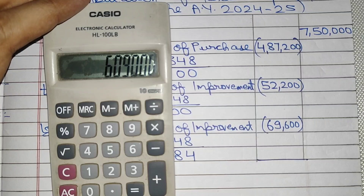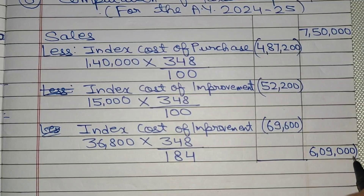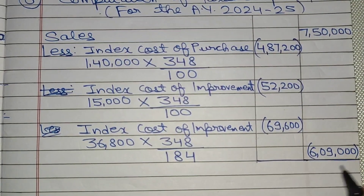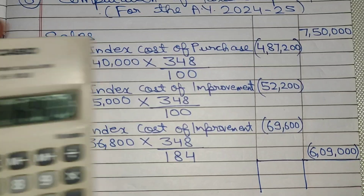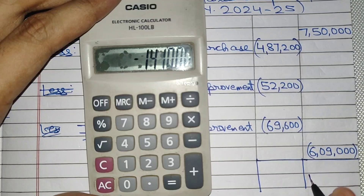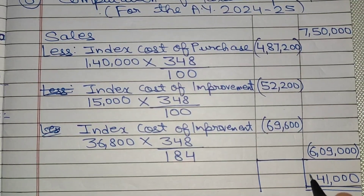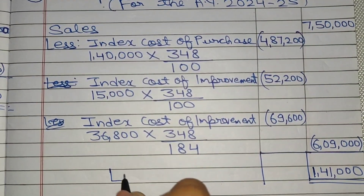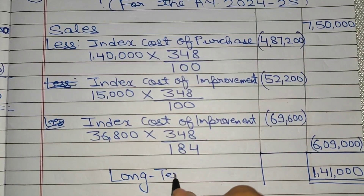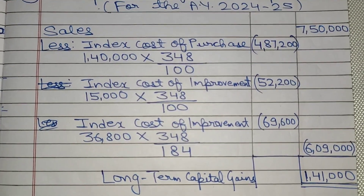Sales price में से less कर लो: 7,50,000 − 6,09,000 = Rs. 1,41,000। यह हो गया आपका long term capital gains।